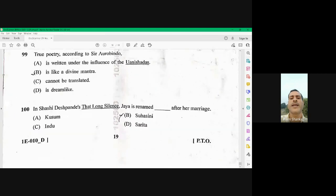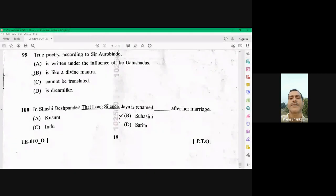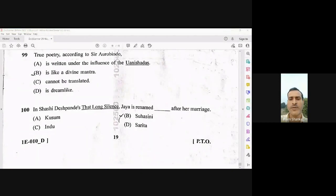And question number 100. In Sasi Des Pandes, that long silence, Jaya is renamed as. So after her marriage, her name was changed from Jaya to Suhasini. So B is the right option. So 100 is B. So these were the 100 questions.